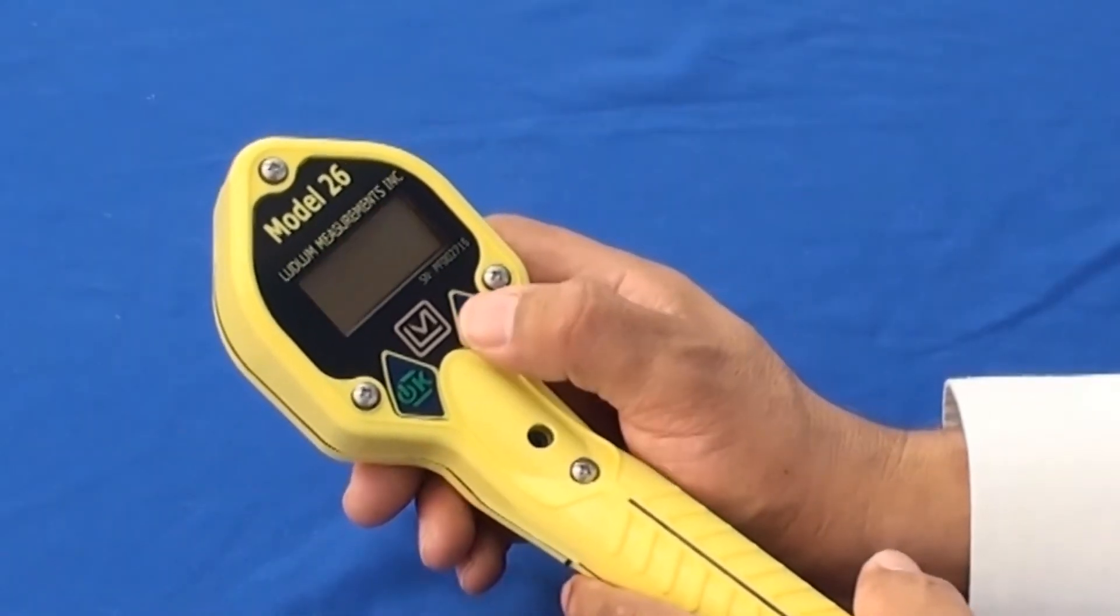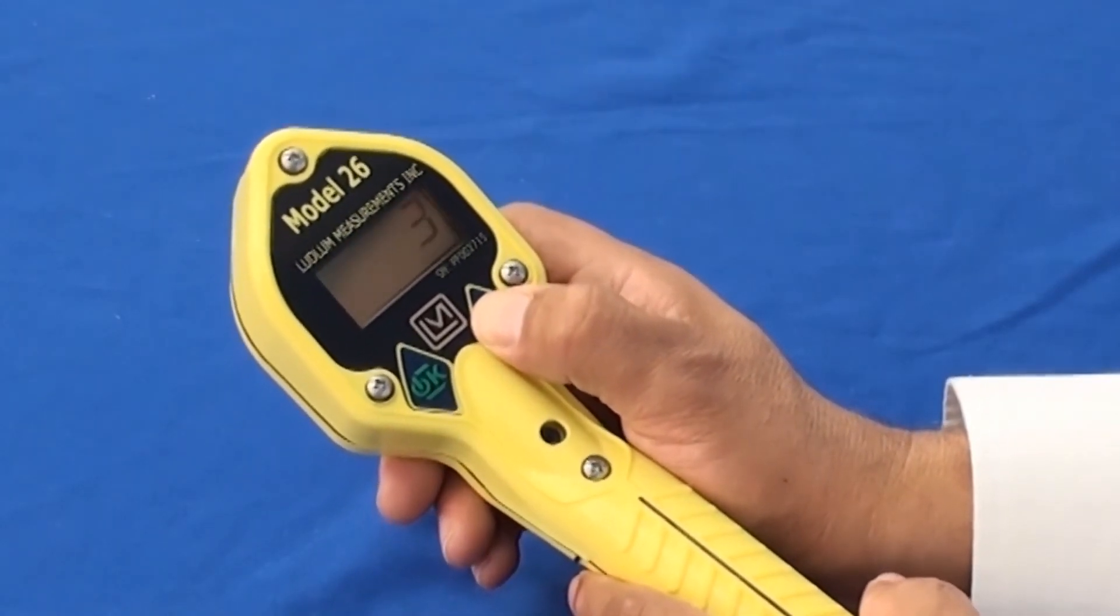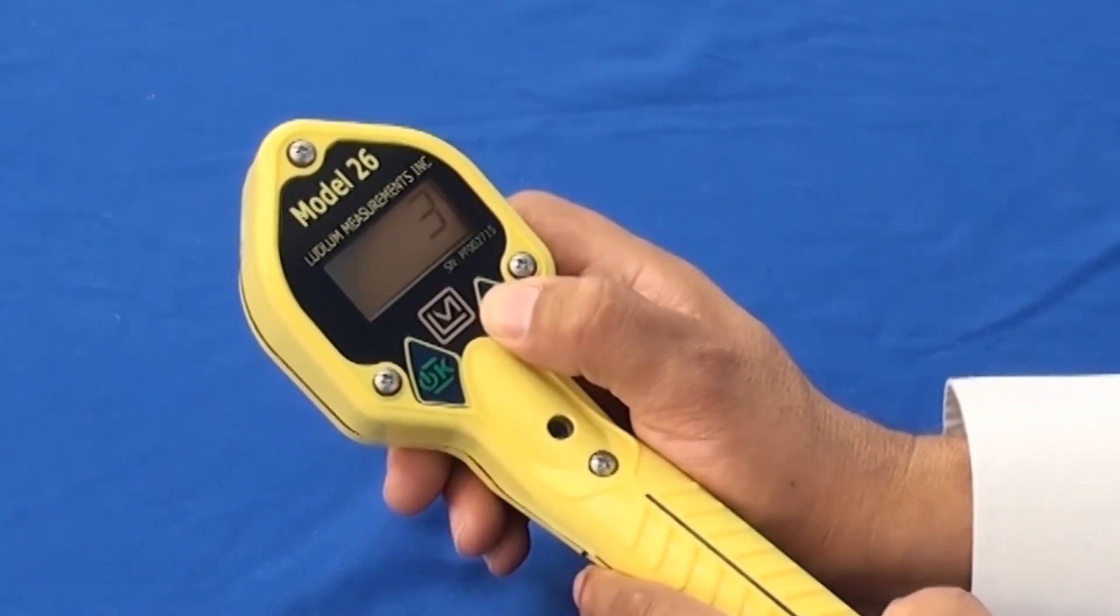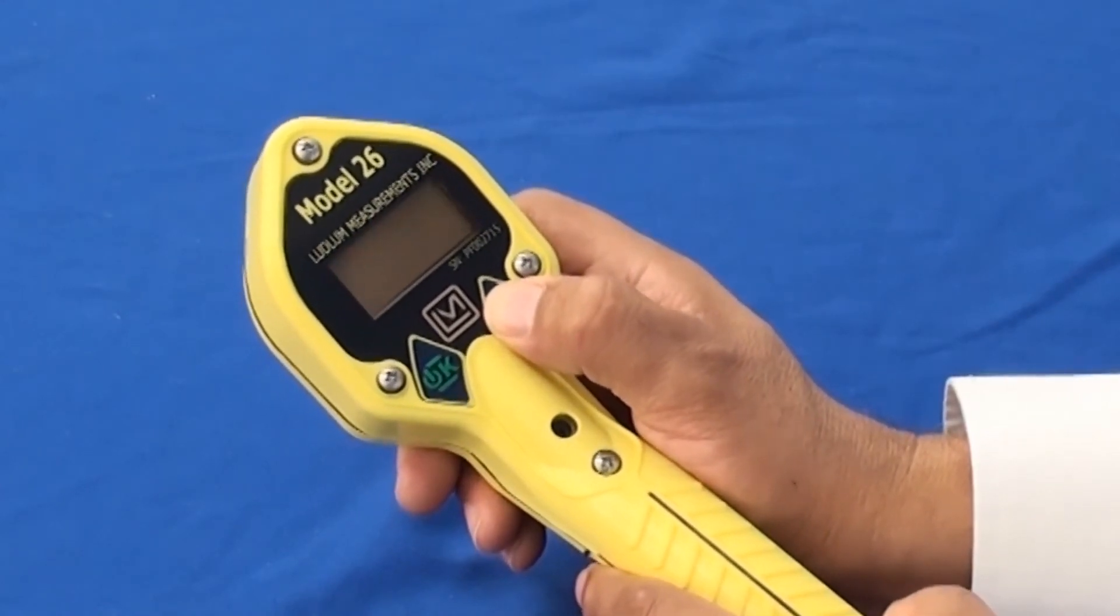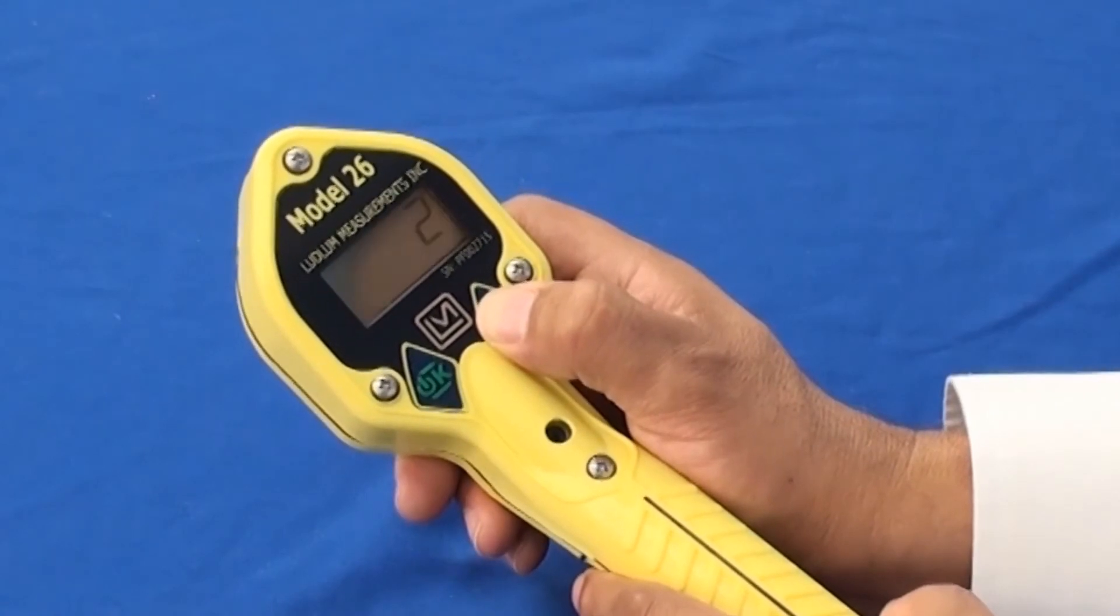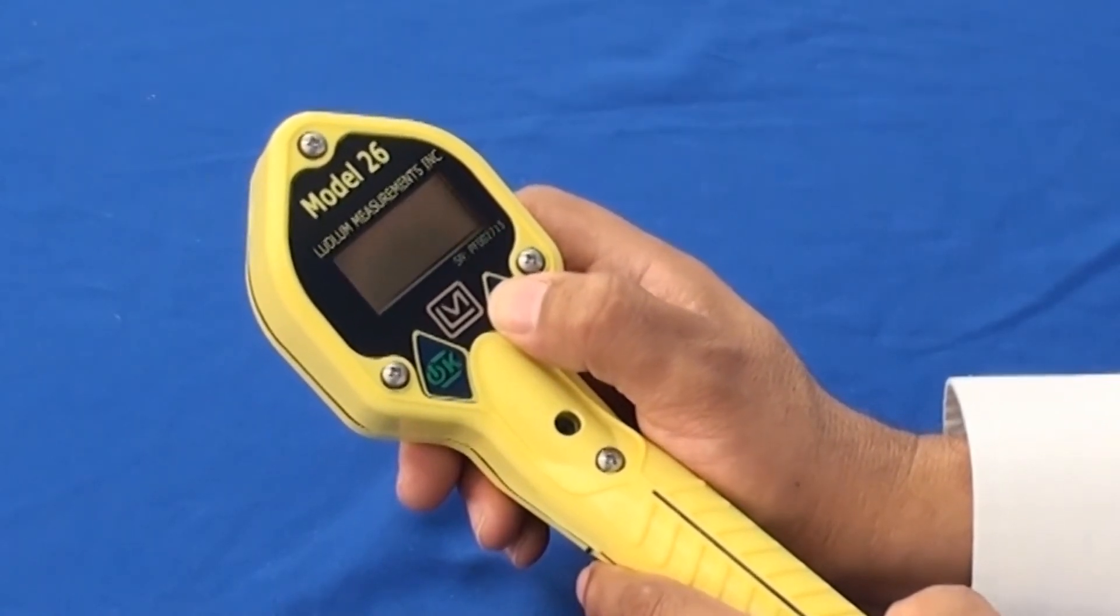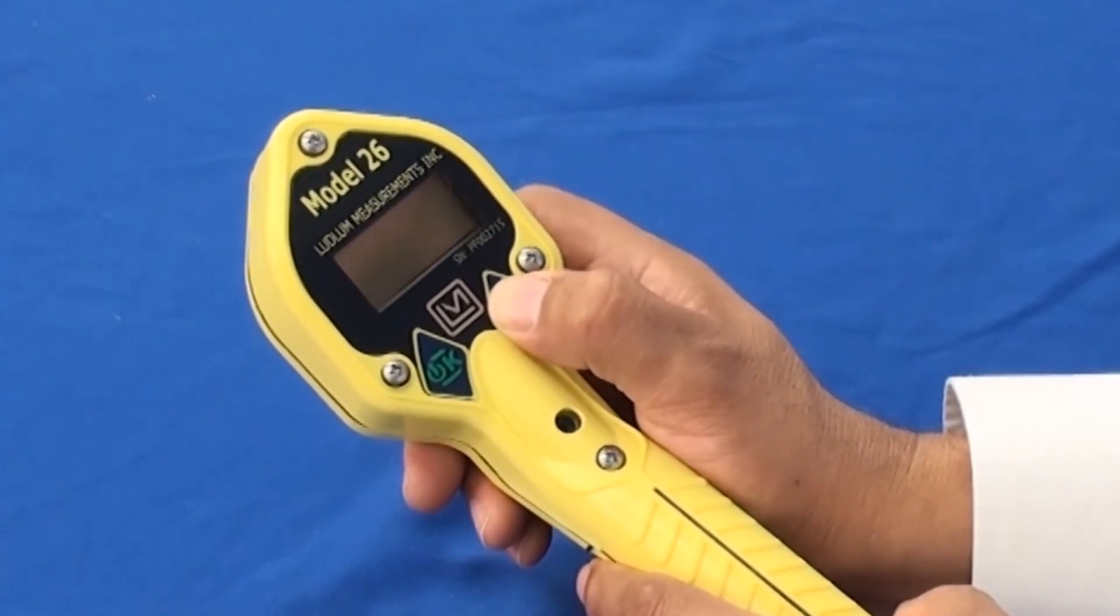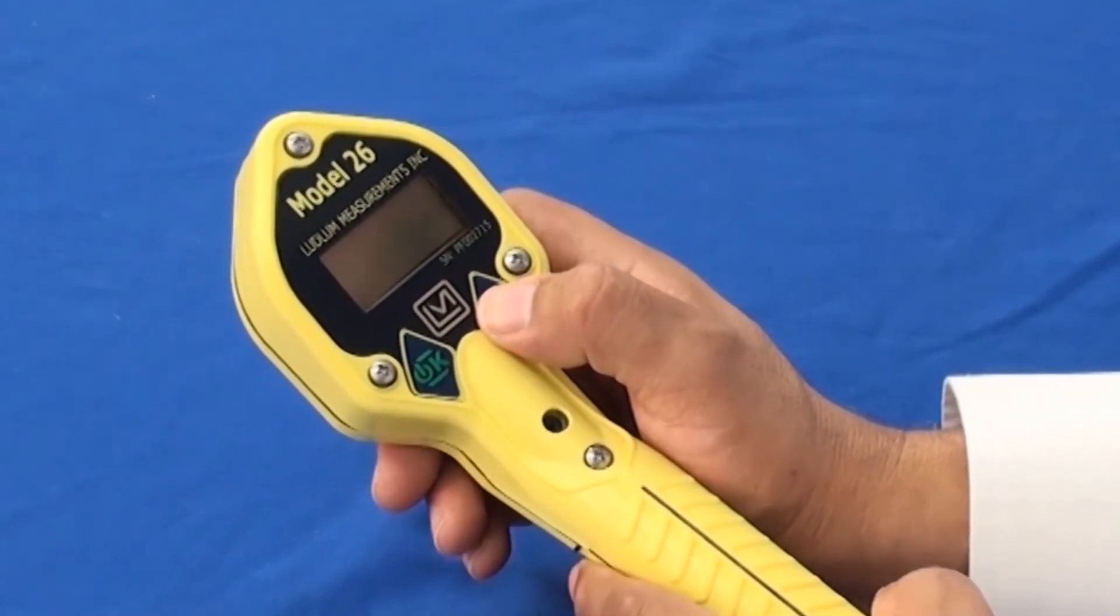The last and final setting is your operational modes, of which you have four, beginning with zero, one, two, and three. Zero is allowing you to display the normal, the max, and the scalar modes. One allows you to display normal and max modes only. Two allows for normal and scalar modes. And three allows for normal mode only.